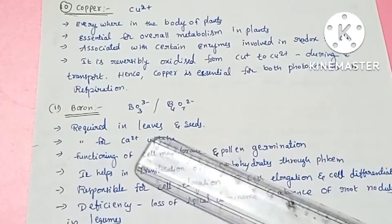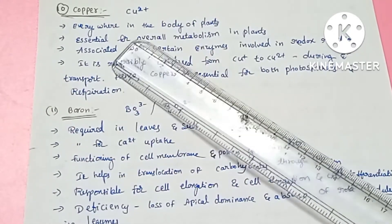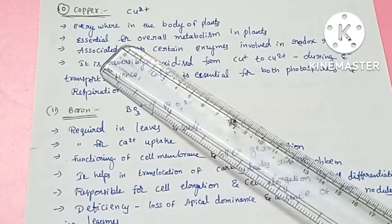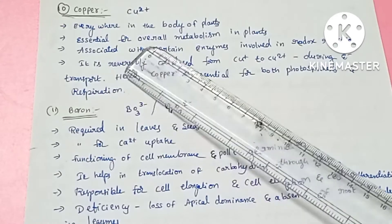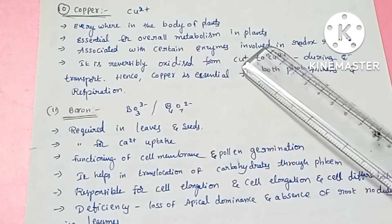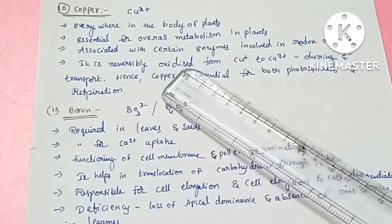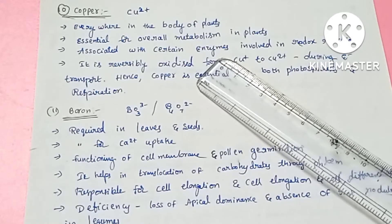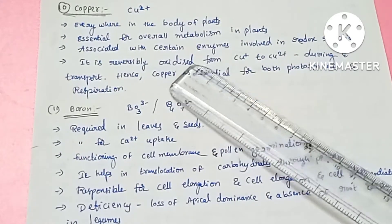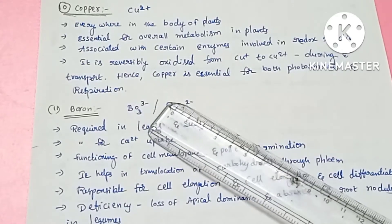The next element is copper, absorbed in the Cu2+ form. Like iron and zinc, copper is required everywhere in the plant body and is essential for overall metabolism. It is associated with oxidation-reduction reactions and electron transport.